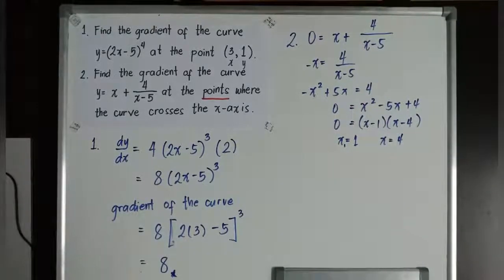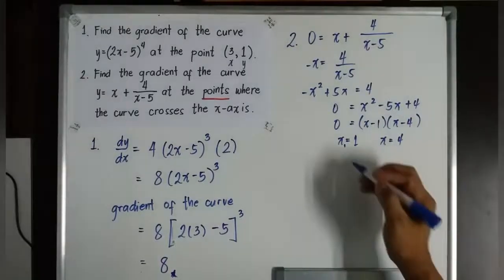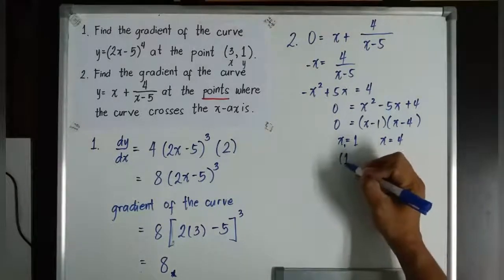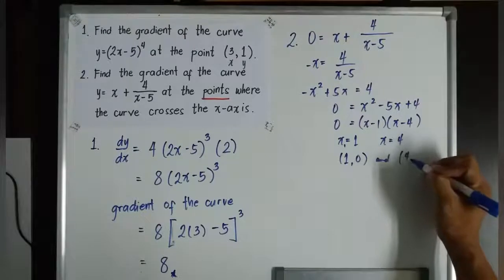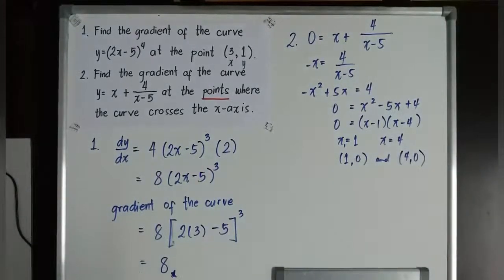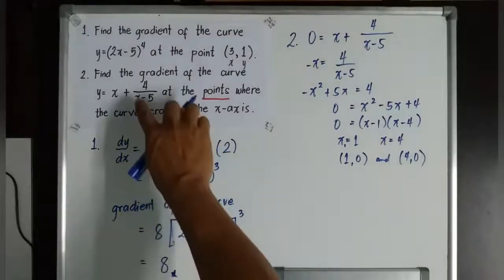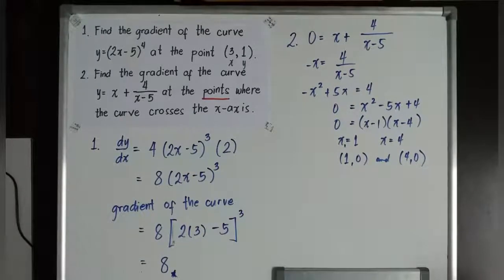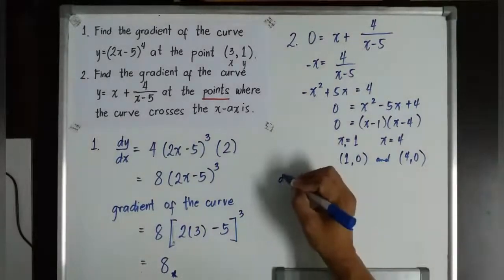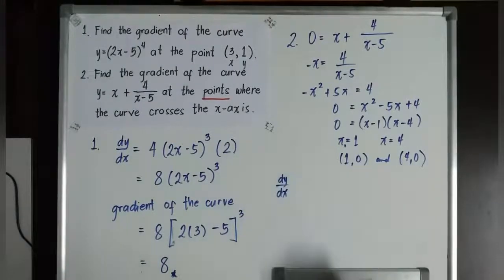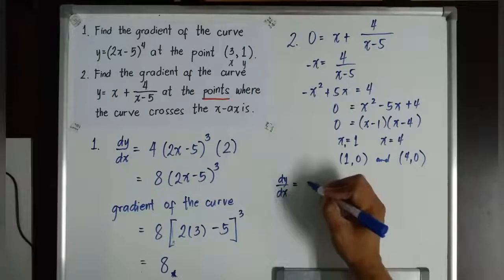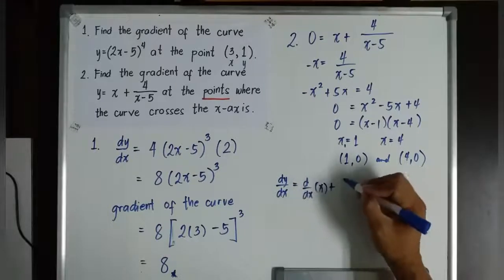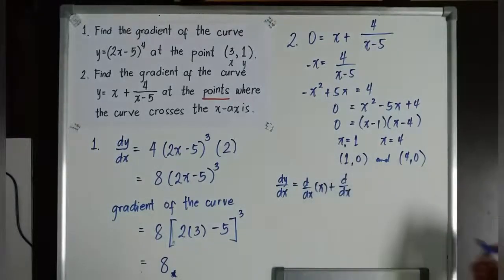Now, we can find the gradient of the curve. Because remember, if it is 1 and x, then those points now are (1, 0) and (4, 0). Thus, I need to find out now the dy over dx of this function. How will I look for the dy over dx of the function? dy over dx is equivalent now to d over dx of x plus d over dx of 4.